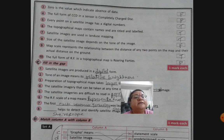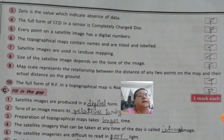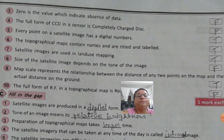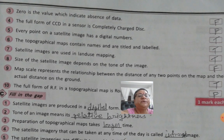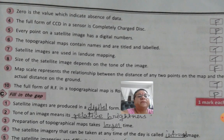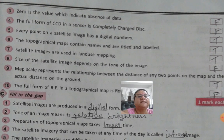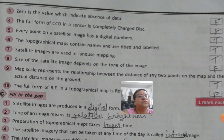The topographical map contains names and are titled and labeled. That is true. The satellite images are used in land use mapping. True. The size of the satellite images depend on the tone of the image. False.